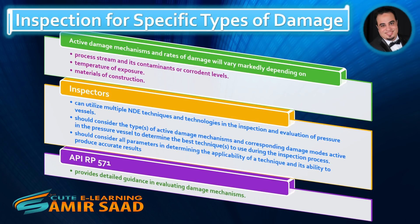Inspection for specific types of damage: active damage mechanisms and rates of damage will vary markedly depending on the process stream and its contaminants or corrodent levels, temperature of exposure, and materials of construction. Inspectors can utilize multiple NDE techniques and technologies in the inspection and evaluation of pressure vessels. Inspectors should consider the types of active damage mechanisms and corresponding damage modes active in the pressure vessel to determine the best techniques to use. The inspector should consider all parameters in determining the applicability of a technique and its ability to produce accurate results.